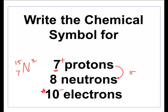My whole complete chemical symbol is fifteen over seven, nitrogen, three minus. This is a fantastic way for scientists to express all kinds of information about the atom — the mass number in atomic mass units, the protons down here, the symbol from the periodic table. By saying the three minus charge, that means the electron cloud has gained three electrons to go from seven now to ten.